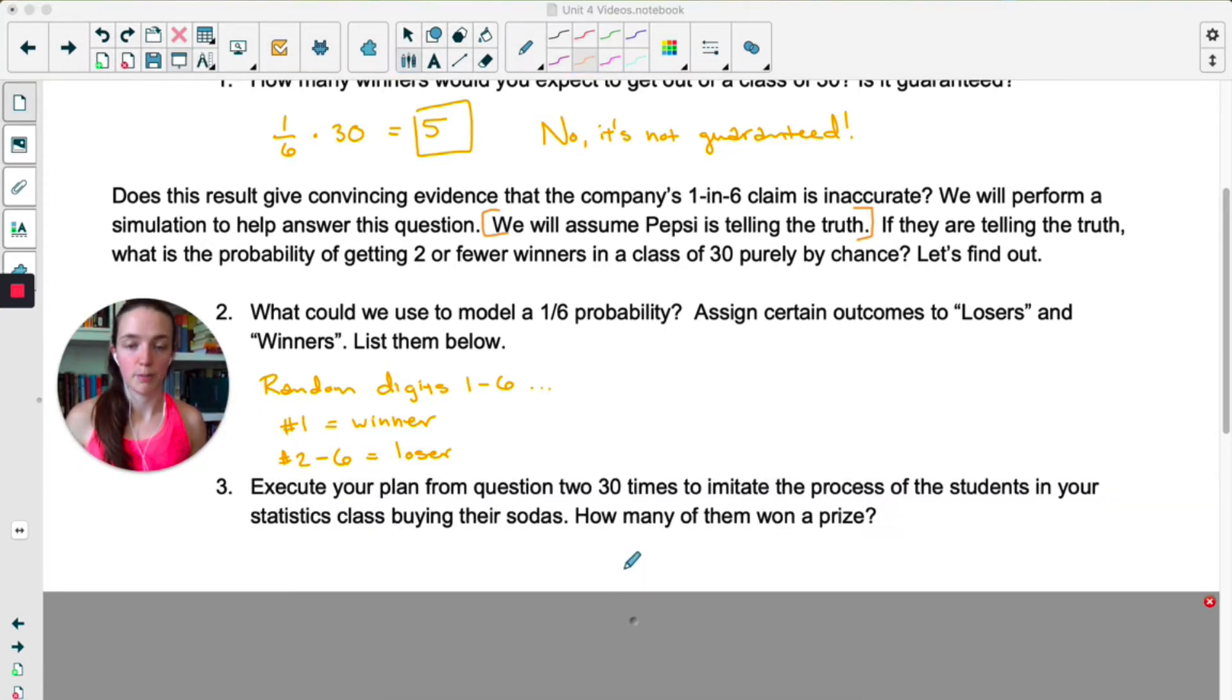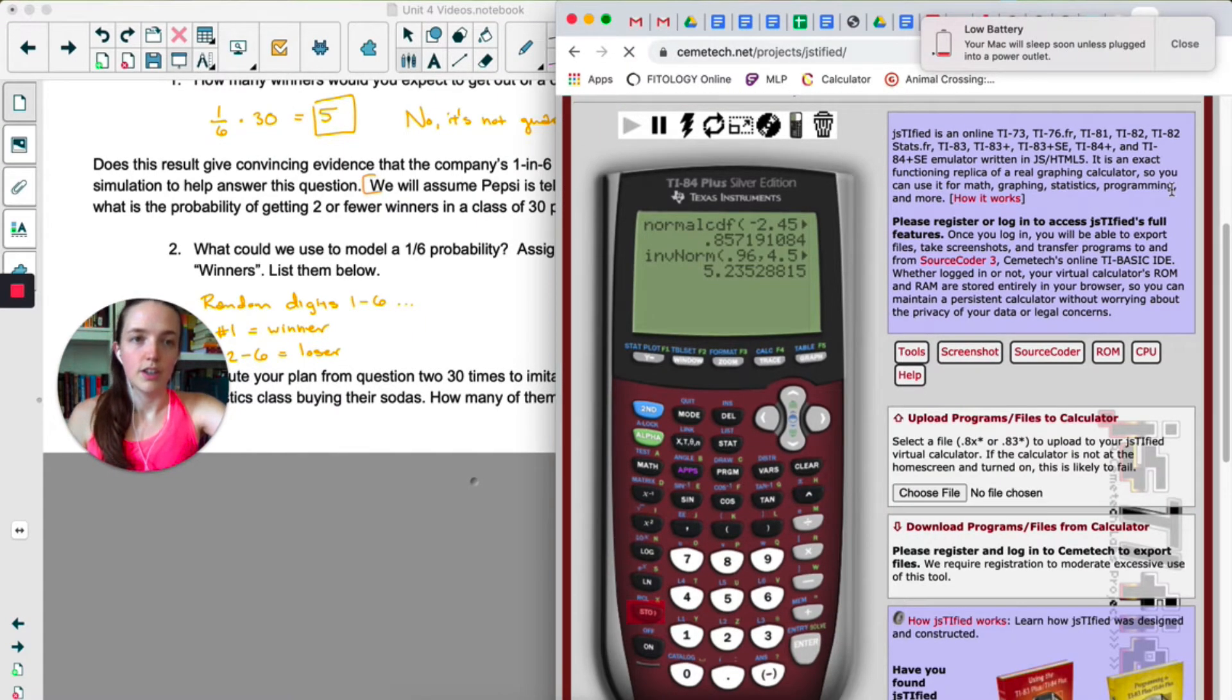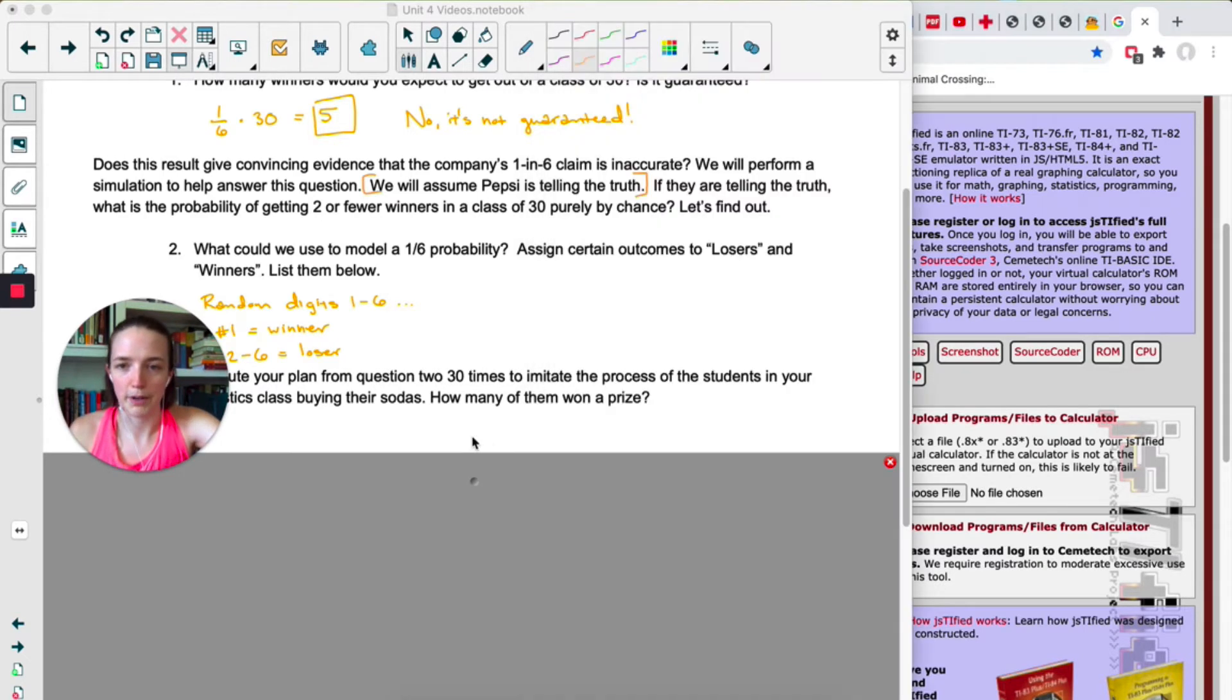So in number three it says to execute your plan 30 times to imitate the process of the students in your class buying bottles of pop. So to do this we're going to get out our calculators. We're going to go to math, prb for probability, and do randint. Now the first two numbers you put into randint are lower and upper. We want a number between one and six, so I'm going to do one comma six, and I want 30 of those numbers, so comma 30, and this gives me my class of 30. Now we decided that one represents a winner and anything else is a loser, so I'm just going to click through here and count how many winners we have.